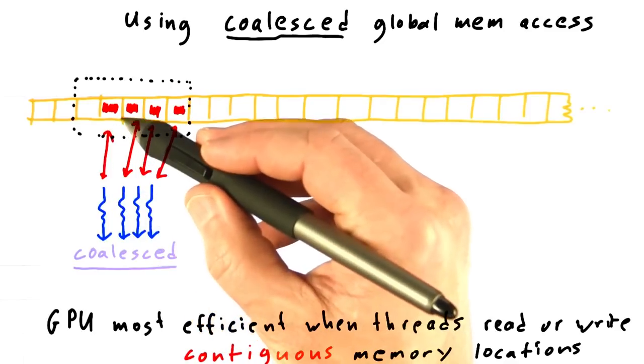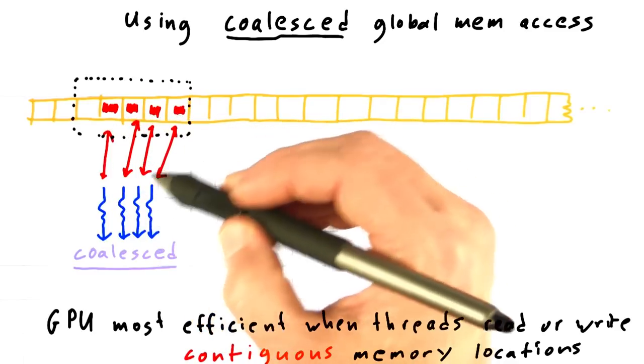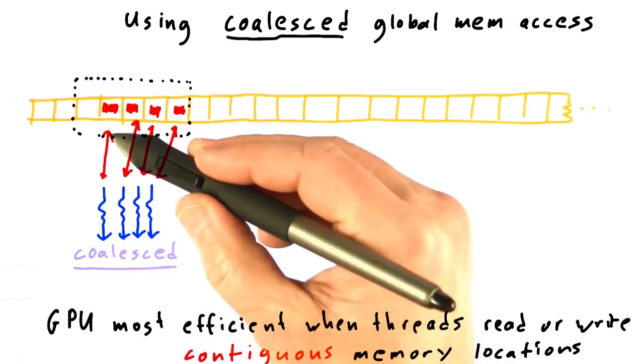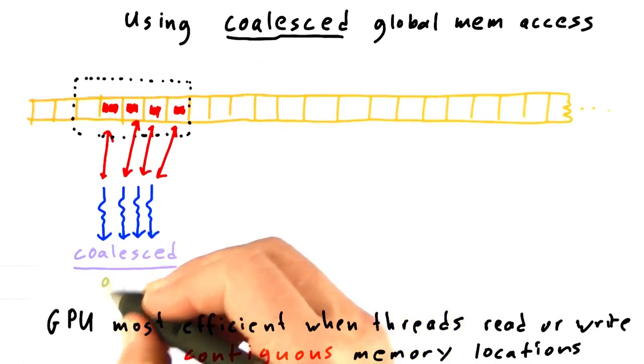In this example, every thread is reading or writing from a chunk of memory that's basically given by the index of the thread plus some offset. And so this is a coalesced access. This is good.